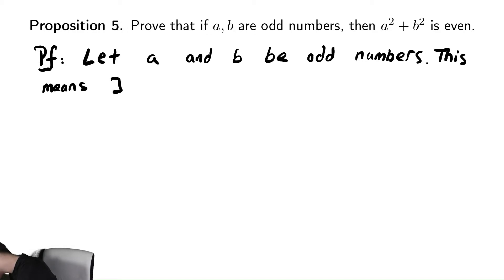That there exists integers, just like being even, such that the numbers a and b are one more than a multiple of two. There exists m and n such that a = 2m + 1 and b = 2n + 1.